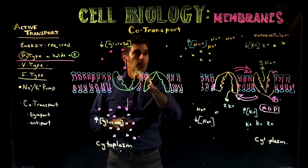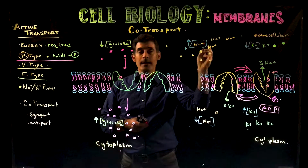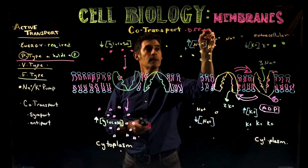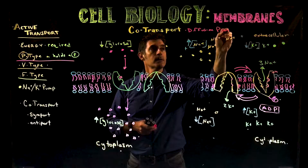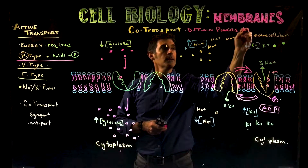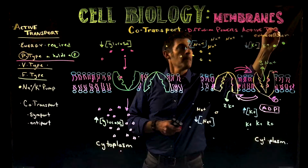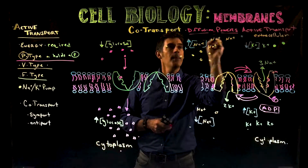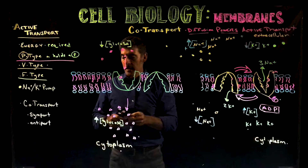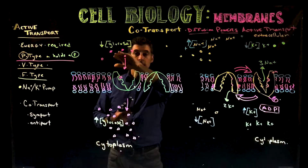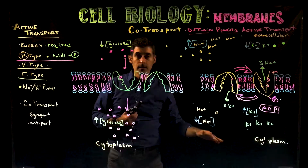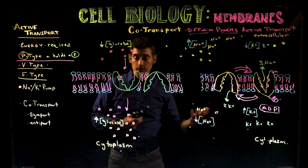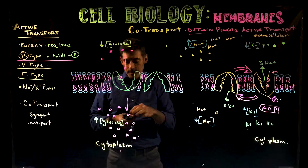So that needs energy. The energy could come from ATP, but in this case the cell is being even more efficient. What's going to happen in co-transport — this is defined as not ATP, but diffusion powering active transport. Diffusion is going to provide the energy. Recall that diffusion is kind of like a ball rolling downhill — it gives off energy as it occurs, and that energy can be useful to the cell.